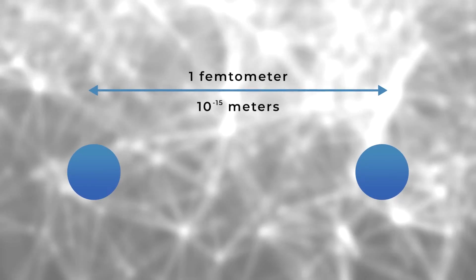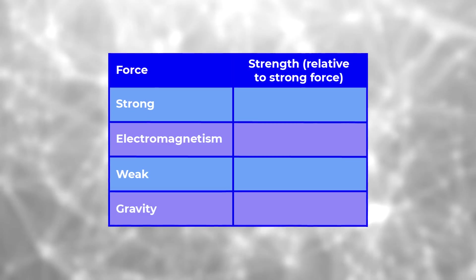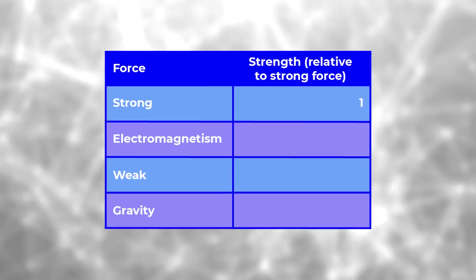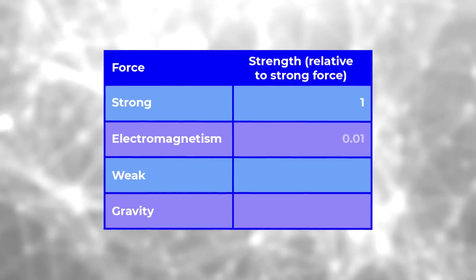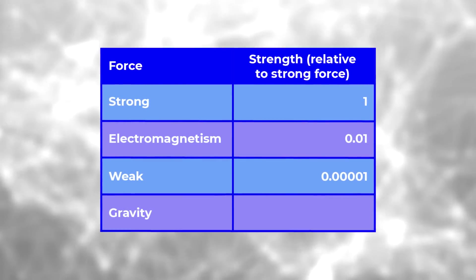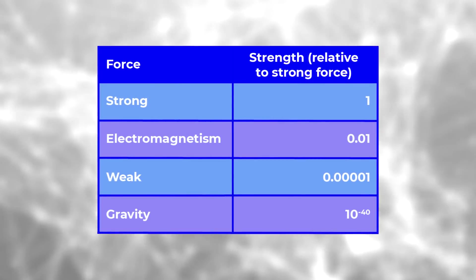The standard scenario is to calculate the strength of the force between two stationary particles separated by a distance that is the radius of a proton, or one femtometer if you want to hang a number on it. At such distances, the strong nuclear force is the strongest — for simplicity, we'll call that strength equal to one. Electromagnetism is about one percent as strong, or 0.01. The weak nuclear force is 0.00001. And the strength of gravity is about 10 to the minus 40. You get different answers if you ask the question with two protons, two electrons, or an electron and a proton, but the bottom line is that gravity is very weak.